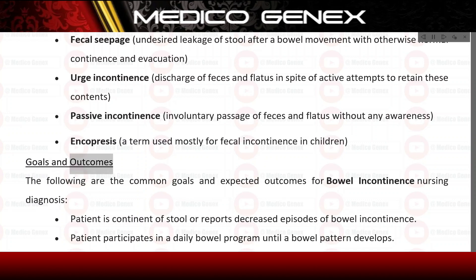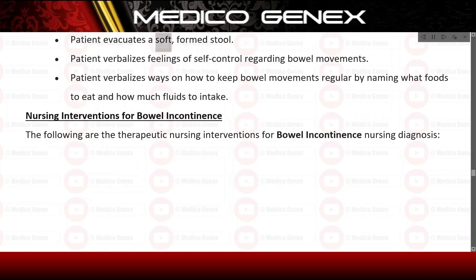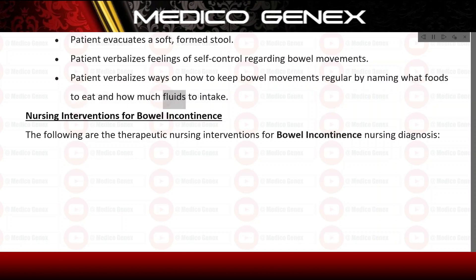Goals and outcomes. Common goals and expected outcomes for the bowel incontinence nursing diagnosis include: the patient is continent of stool or reports decreased episodes of bowel incontinence; the patient participates in a daily bowel program until a bowel pattern develops; the patient evacuates a soft, formed stool; the patient verbalizes feelings of self-control regarding bowel movements; and the patient verbalizes ways to keep bowel movements regular by naming foods to eat and fluids to intake.